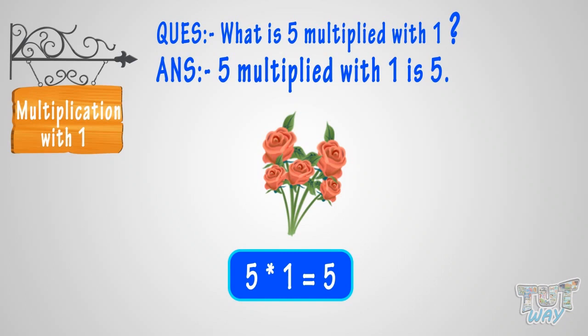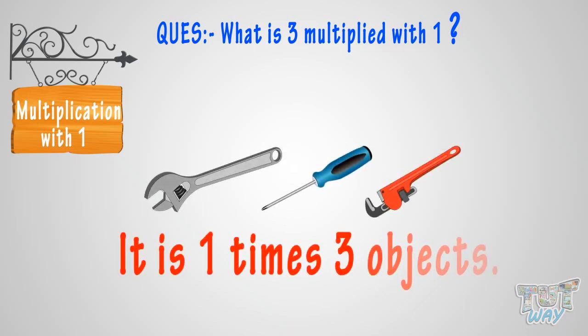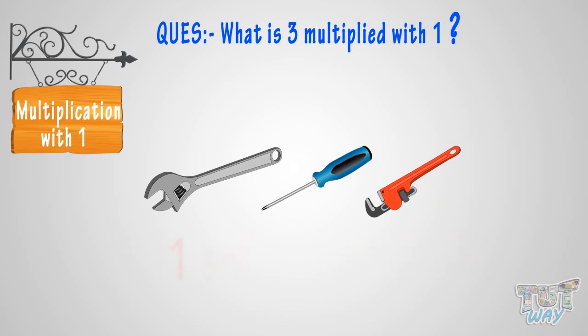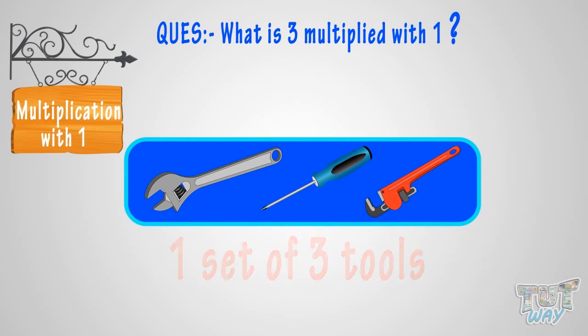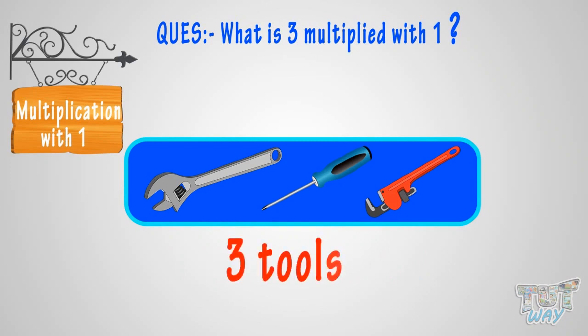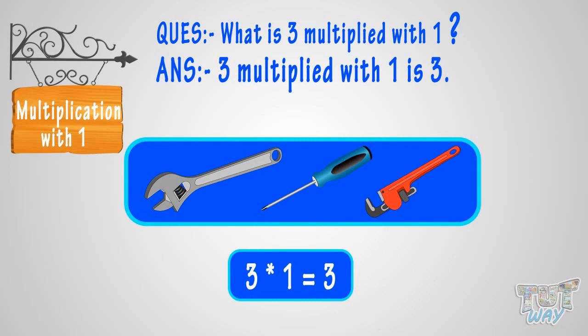Let's take another example. What is three multiplied with one? It is one times three objects. See the figure? You have one set of three tools. Then how many tools do you have? You have three tools. This is three multiplied with one, or one times three tools. So, three multiplied by one is three.